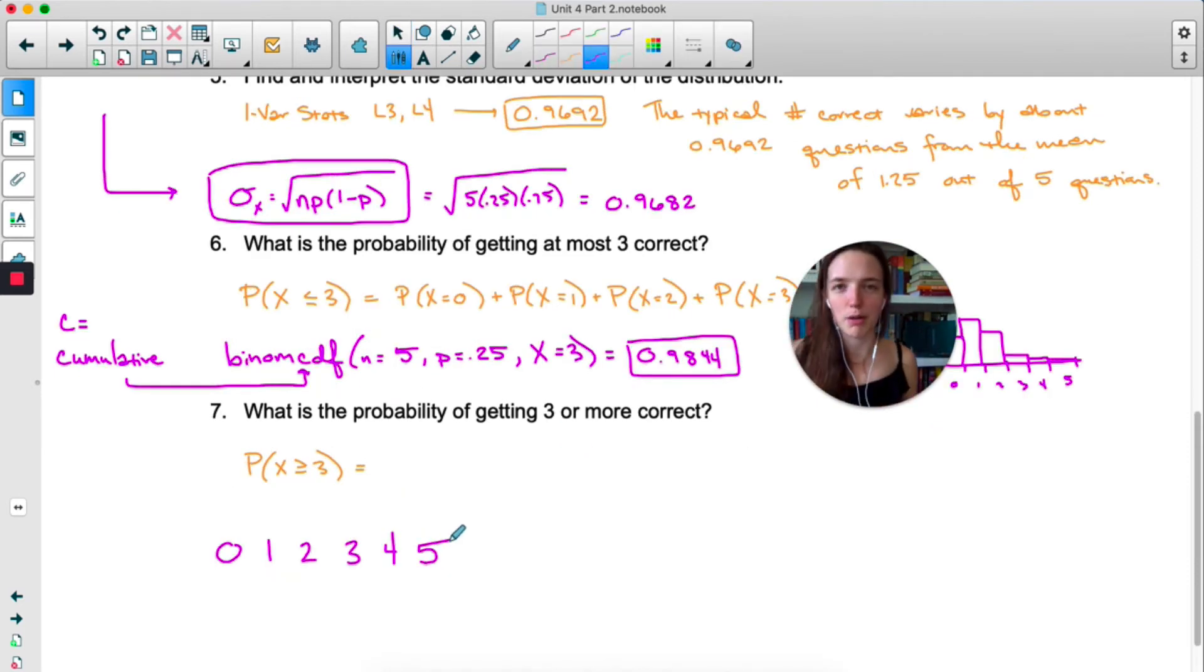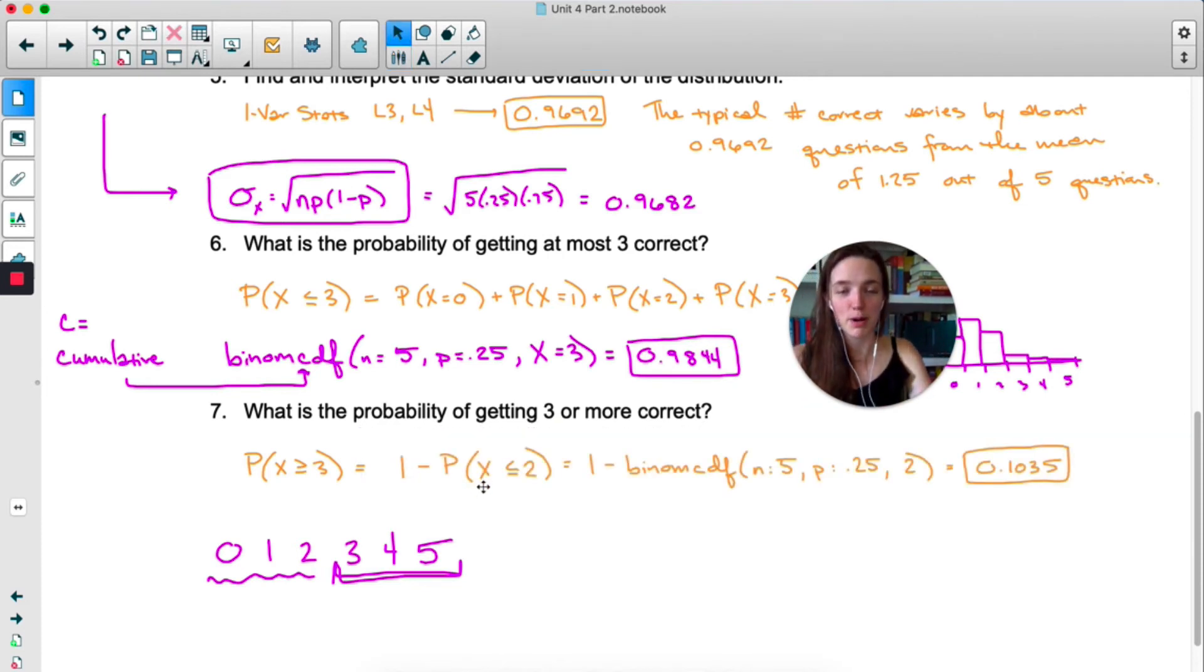Sometimes it helps me in a problem like this to write out all the outcomes and then think about what we want. We want three or more, which is this, three, four, or five, which is everything but zero, one, and two. So we can use our complements rule that we learned about earlier in this unit and do one minus probability that x is less than or equal to two. So one minus and then binom cdf five point two five and two. That will leave us with only the three, four, and five.